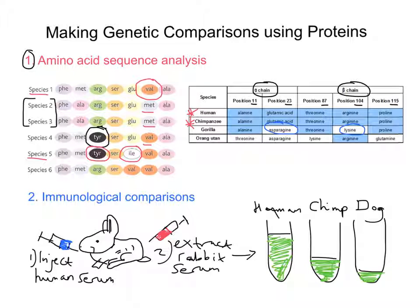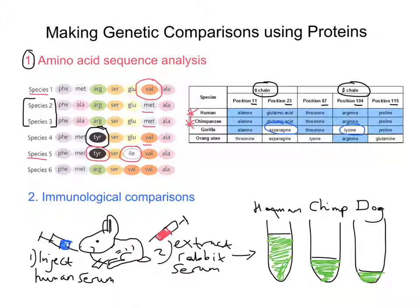This video is purely to outline how we use a knowledge of protein structure — or proteins essentially — to make genetic comparisons. We can either look at the amino acid sequence and compare the position of particular amino acids to see which are similar and which are different for certain species, or we can use an immunological comparison: using anti-human antibodies produced in rabbit serum and looking at the amount of precipitate that forms when that serum is added to the serum of other particular species. Hope all that helps.